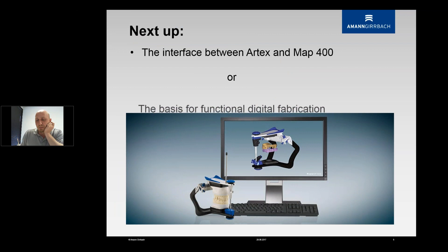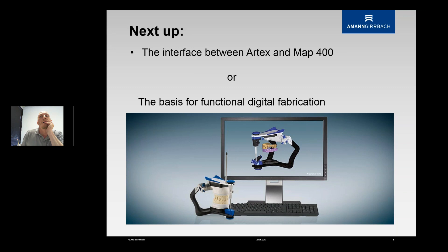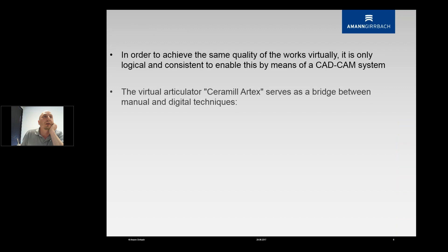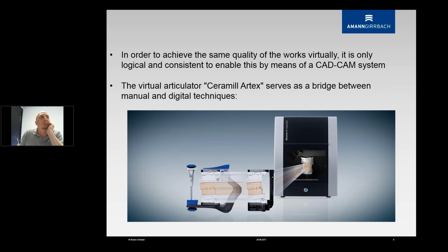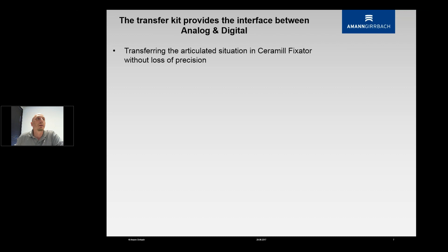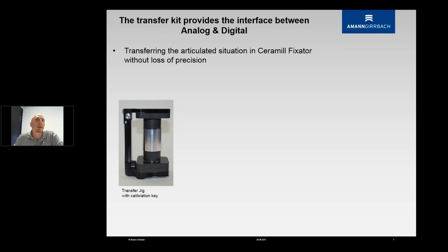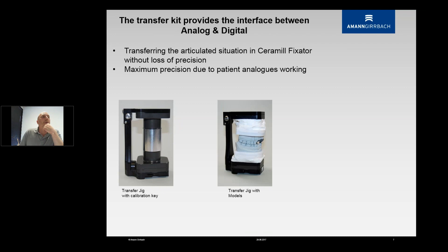Next we want to look at the interface between the RTX and the MAP400. In order to achieve the same quality of work, it only makes sense to use the virtual articulator as well, to serve as a bridge between analog and digital. The transfer kit is responsible for transferring everything into the MAP400 into the digital world. This is almost lossless — 8 microns of position — if calibrated with a calibration key. Cases can be transferred with 8 microns of position between different RTX articulators and the MAP400, including a face bow if present.